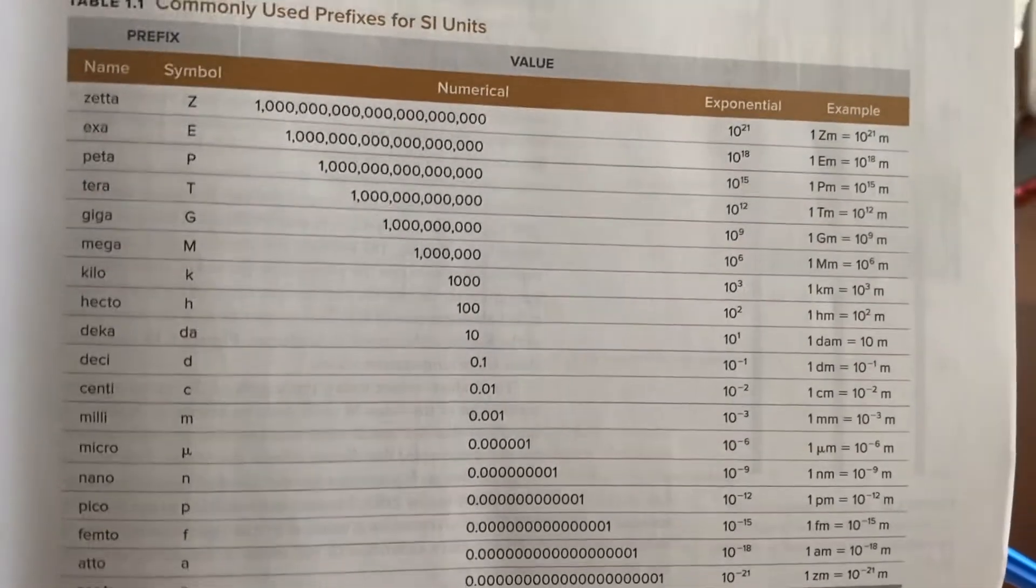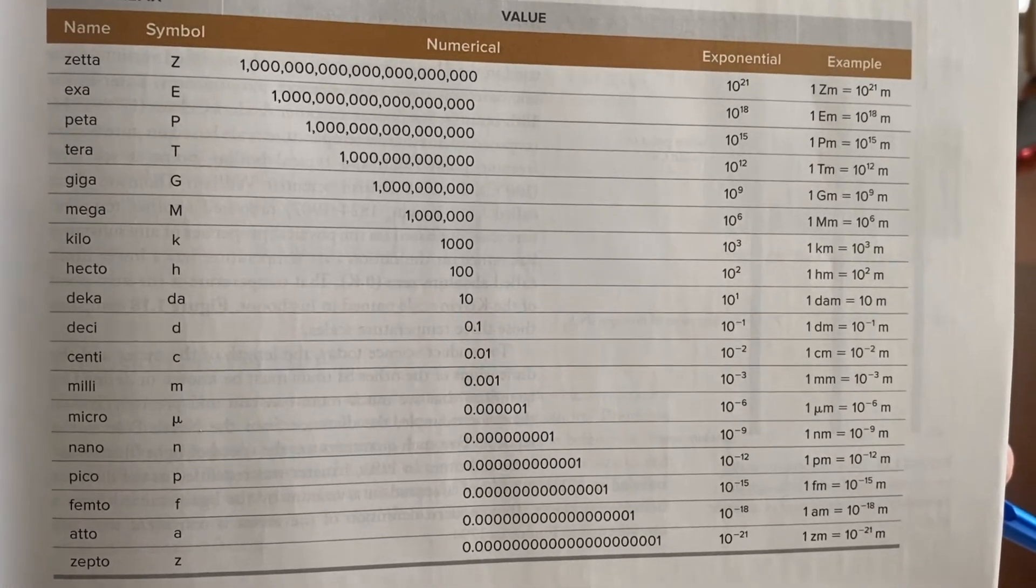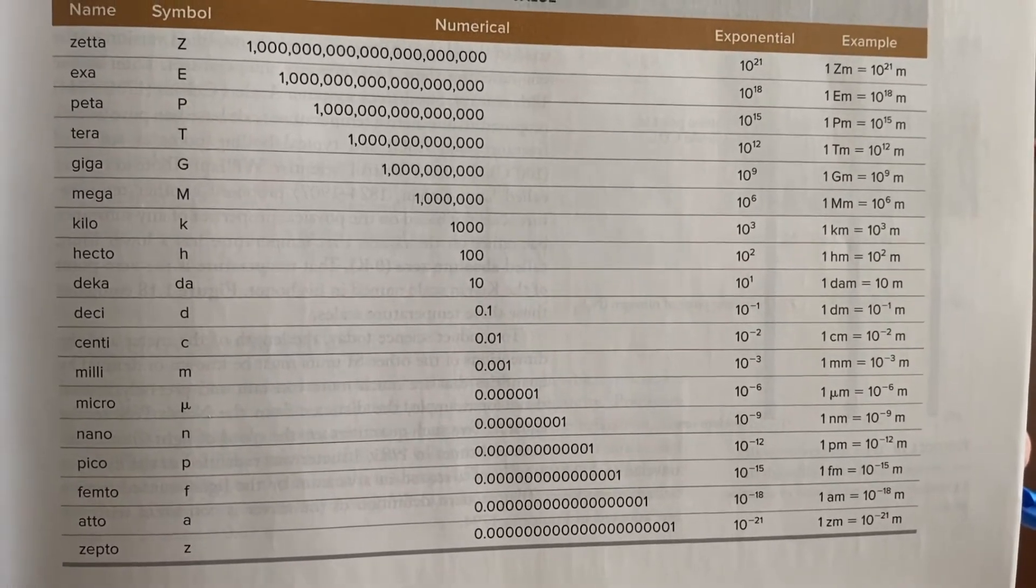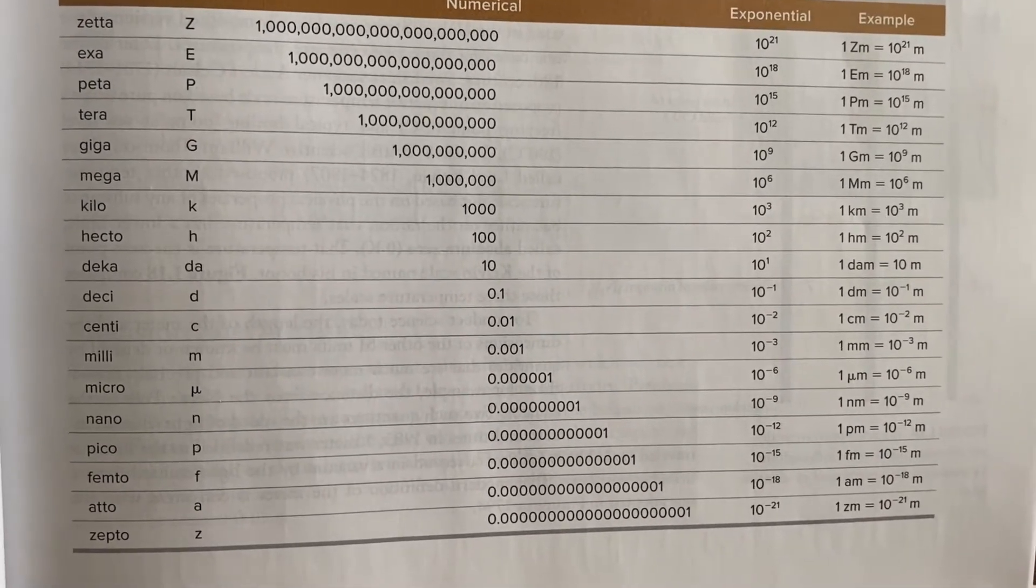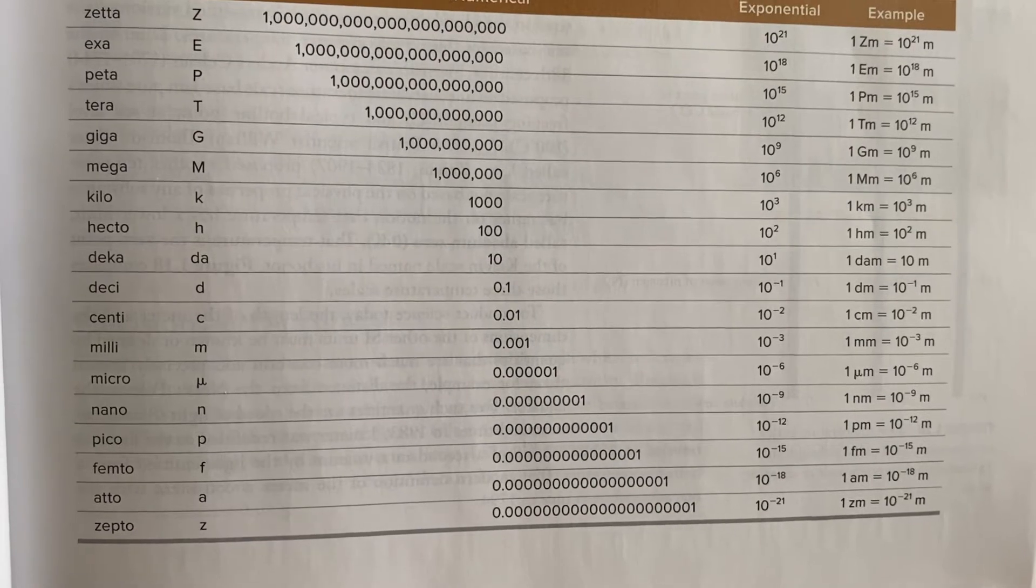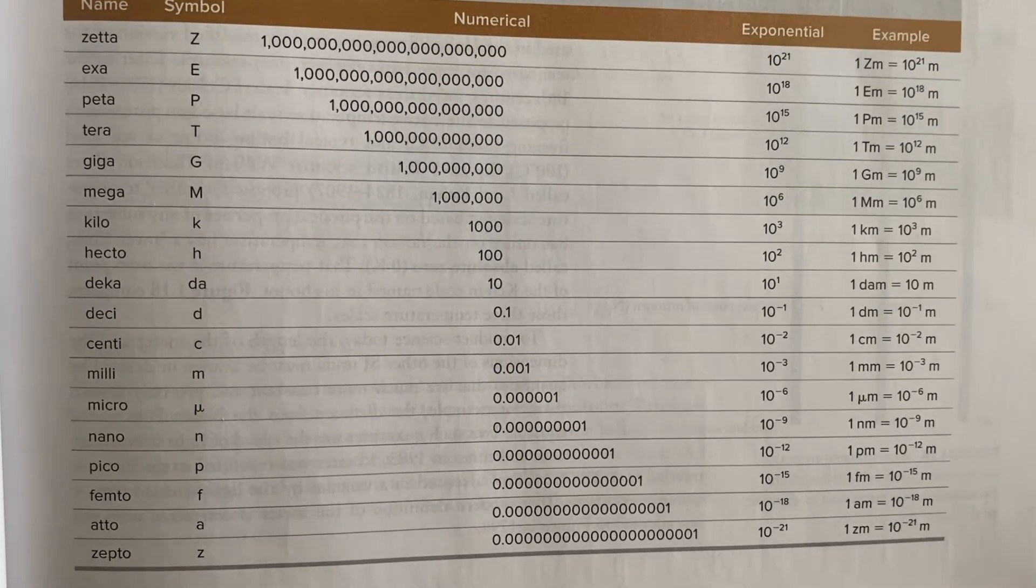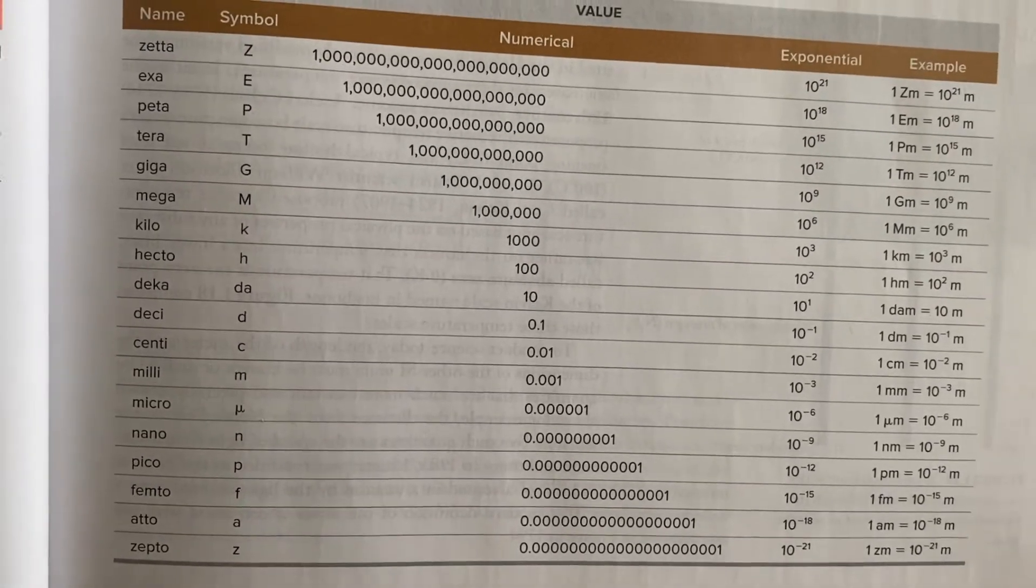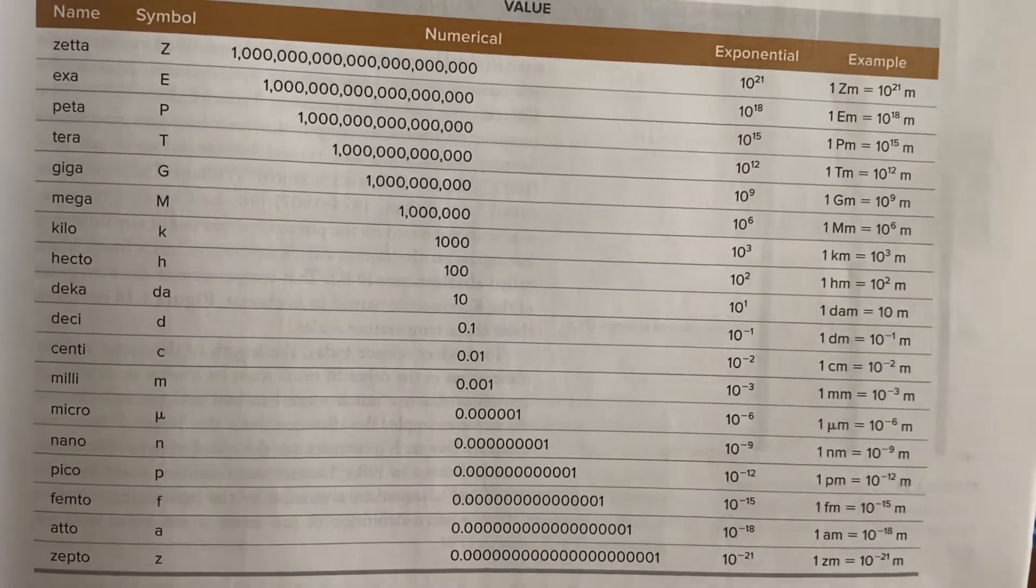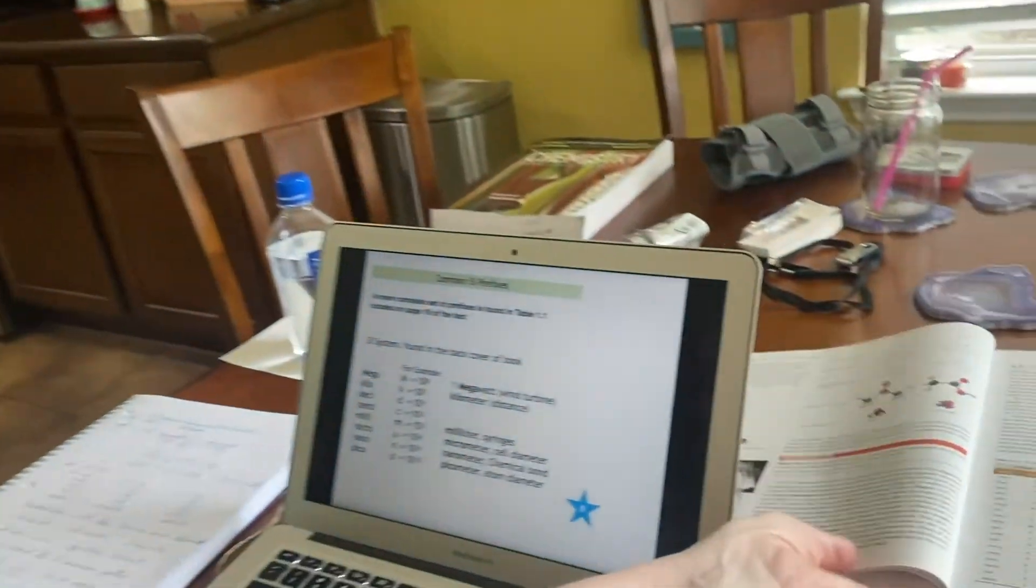These are units that you're more likely to use in a physics setting. The Zeta, that would be something you would find in astrophysics and the Zepto, that would be something you were doing in like laser physics. We don't tend to use the large ones in chemistry. We tend to use the small ones because we're working with small amounts and small amounts of time.